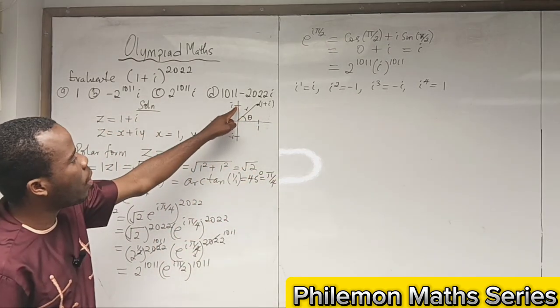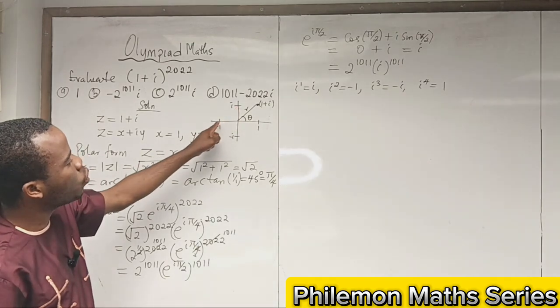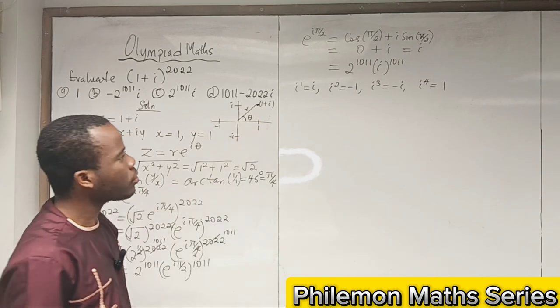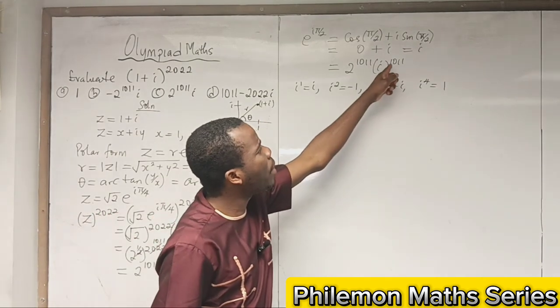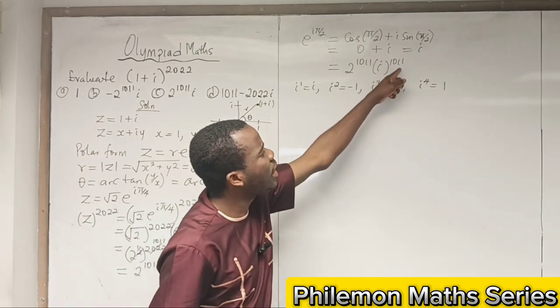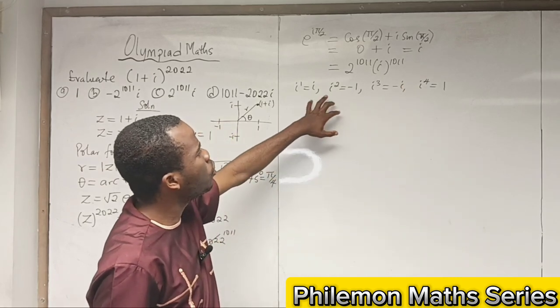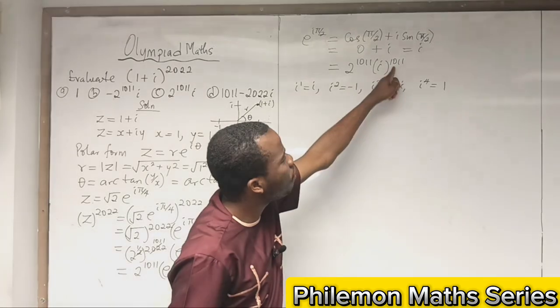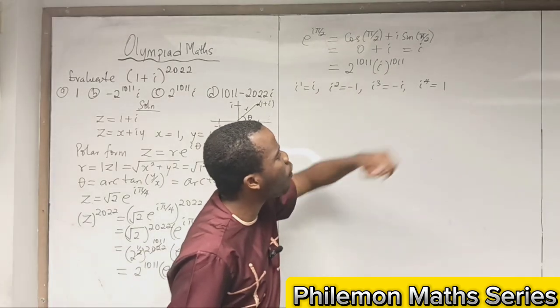Start from here: i^1 is i, i^2 is -1, i^3 is -i, i^4 is 1. So what will i^1011 be? What we will do is, because there are multiples of 4, we divide 1011 by 4.